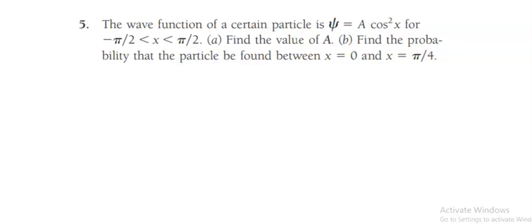This is the fifth question from the quantum mechanics chapter. The question is: the wave function of a certain particle is psi equal to A cos squared x, for the region x is minus pi by 2 to plus pi by 2. Find the value of A.